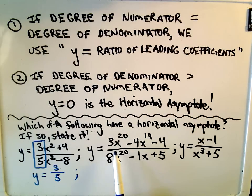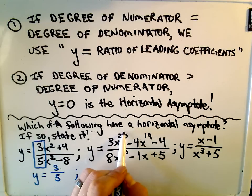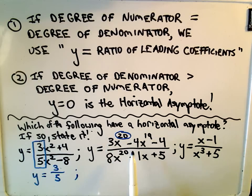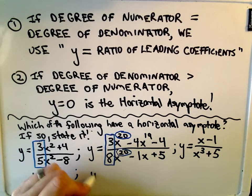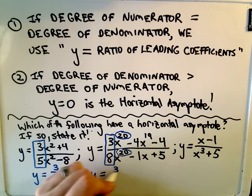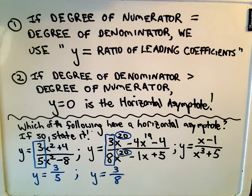Notice in the next problem, we have the degree of the numerator, and again, the degree is just the highest power, the highest exponent. We've got x to the twentieth, we've got x to the twentieth, the degree of the numerator is equal to the degree of the denominator. Again, we just take the ratio of the leading coefficients. It says the line y equals three over eight is going to be our horizontal asymptote.